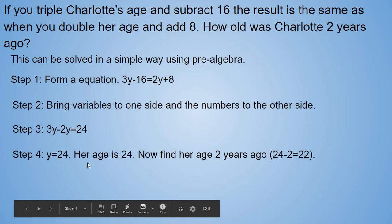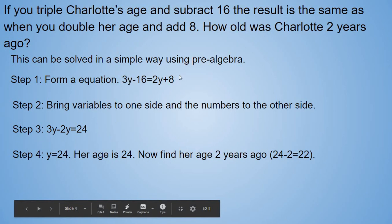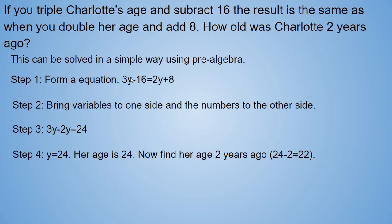Her age is 24. Y is the unknown value, that's her age. So her age is 24. Before we do anything else, we have to check if we're correct so far. So let's go up here and see if when we substitute her age into this equation, if the results are the same. Okay, substitute it here, 24 times 3, that's 72. 72 minus 16, that's 56.